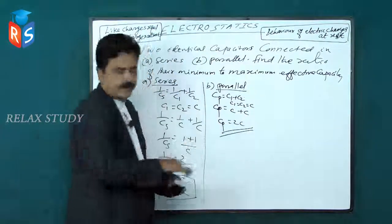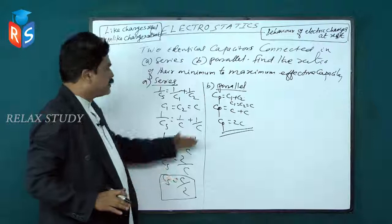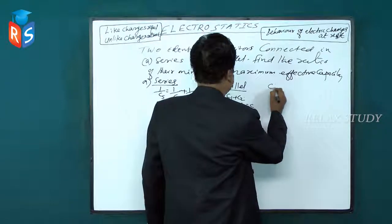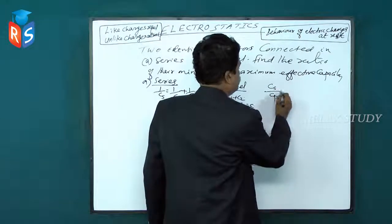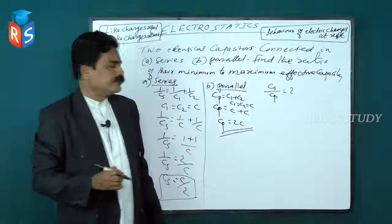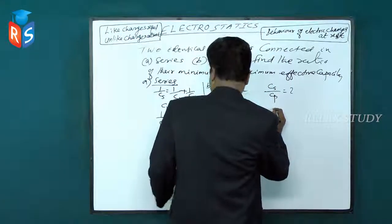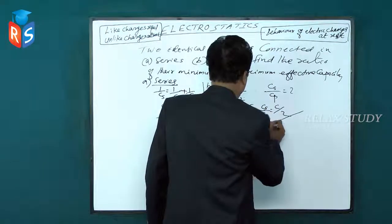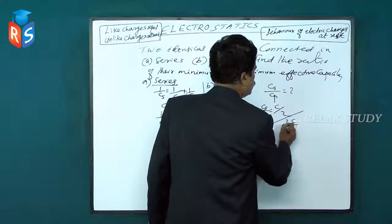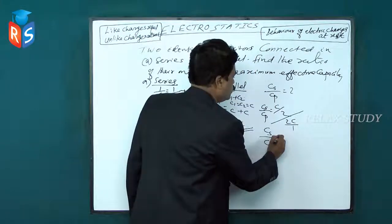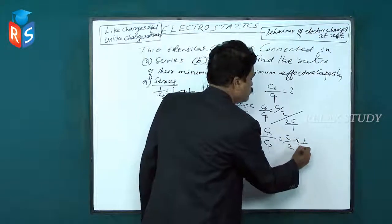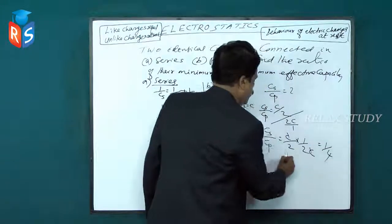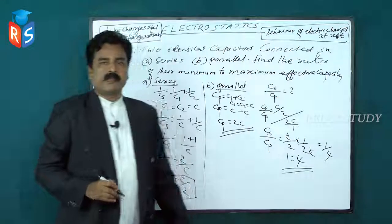This is the minimum effective capacitance and this is the maximum effective capacitance. The ratio Cs/Cp = (C/2) / (2C) = C/2 × 1/2C = 1/4. So 1:4 is the ratio of their minimum to maximum effective capacitance.